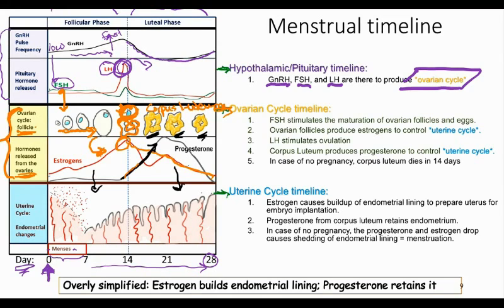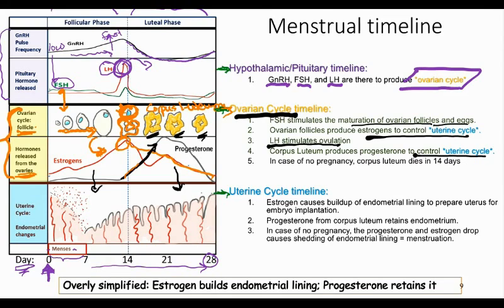So we had GnRH, FSH, and LH being released in order to produce the ovarian cycle. The ovarian cycle releases estrogens and progesterone in order to guide and produce the uterine cycle. The ovarian cycle matures the follicles and eggs, produces estrogens to control the uterine cycle, stimulates ovulation, and produces progesterone to control the uterine cycle.